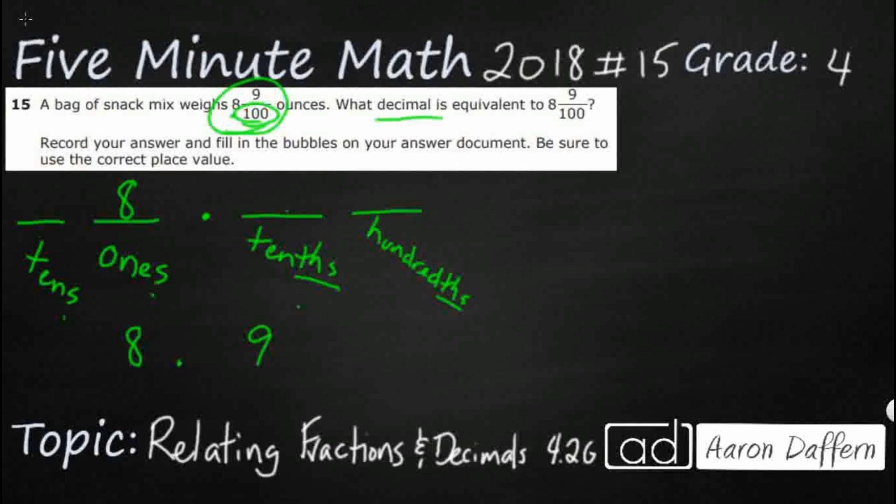well, this is really what I'd be looking at. I'd be looking at eight and nine. And then you have to look at the place value tenths. I don't want eight and nine tenths. I want eight and nine hundredths,